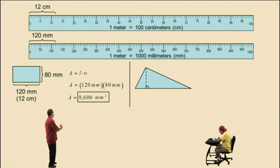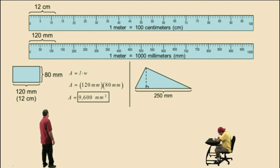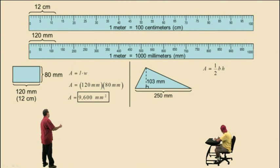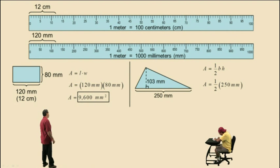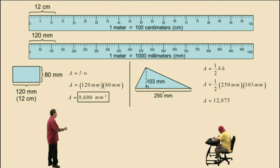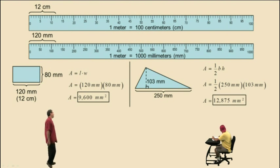Let's look at this triangle. Its base has a length of 215 millimeters and its height is 103 millimeters. The formula for the area of a triangle is one-half base times height. Substituting 250 millimeters for the base and 103 millimeters for the height: 250 times 103 divided by 2 gives us 12,875 millimeters squared. So our area is 12,875 square millimeters.